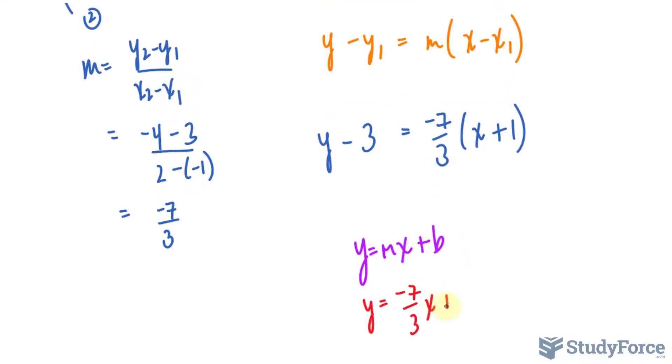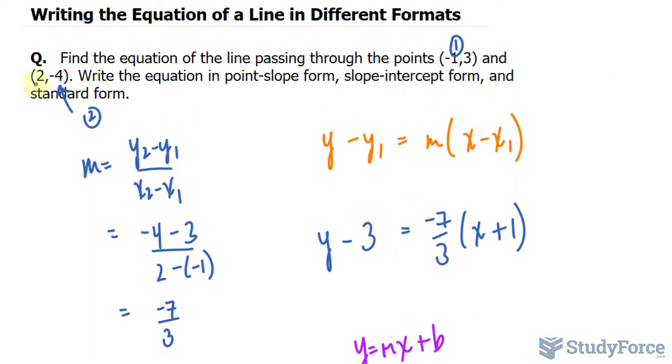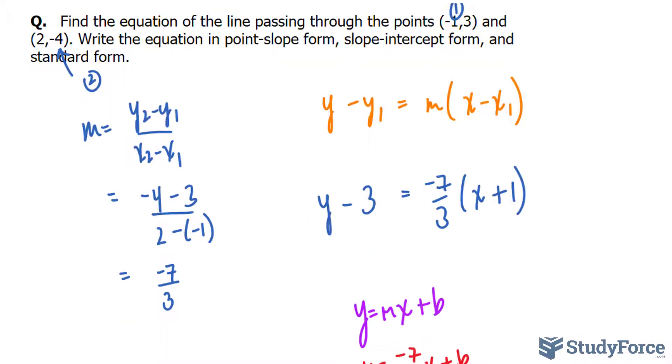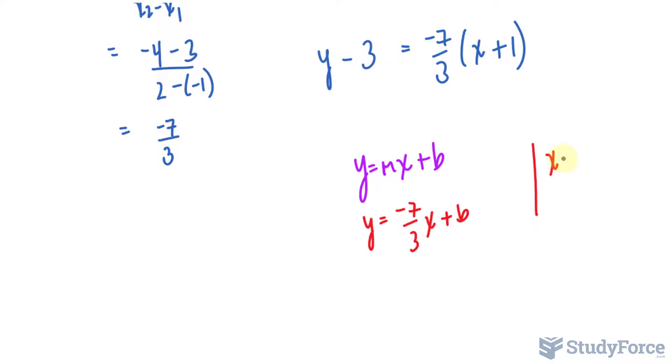To find b, we will substitute the coordinates of any of these two points. I'm going to choose point 1 again, where we have x is equal to negative 1 and y is equal to 3. I'll substitute those where I see x and y to find out b. 3 is equal to negative 7 over 3 times negative 1 plus b.